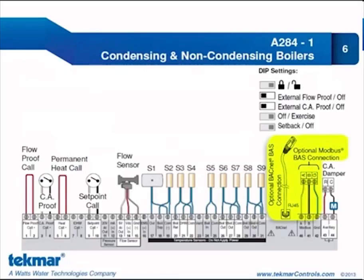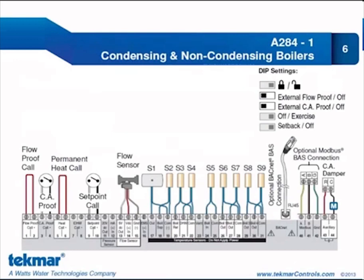For communication terminals, since we are communicating to a building automation system using either BACnet or Modbus, we've shown both connections. The BACnet connection is through an RJ45 port at the top of the 284, and the Modbus connection comes through terminals 40, 41, and 42. You'll also see the auxiliary relay, which in this case is being used to control the combustion air damper. This relay can be used to control either a combustion air damper or a recirculation pump for domestic hot water applications.